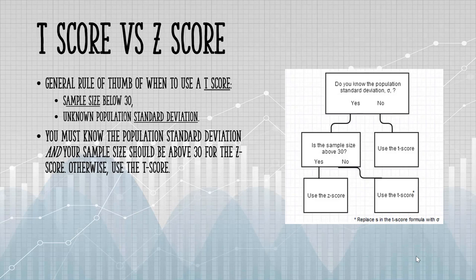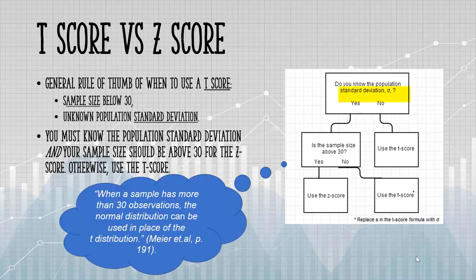In real life, it's more common just to use the T-distribution as we usually don't know sigma. I have a quote here from Meyer et al.'s textbook. They say, when a sample has more than 30 observations, the normal distribution can be used in place of the T-distribution. You can always use a T-score. The use of the T-distribution is theoretically sound for all sample sizes, but you can choose to use the normal distribution if your sample size is above 30.